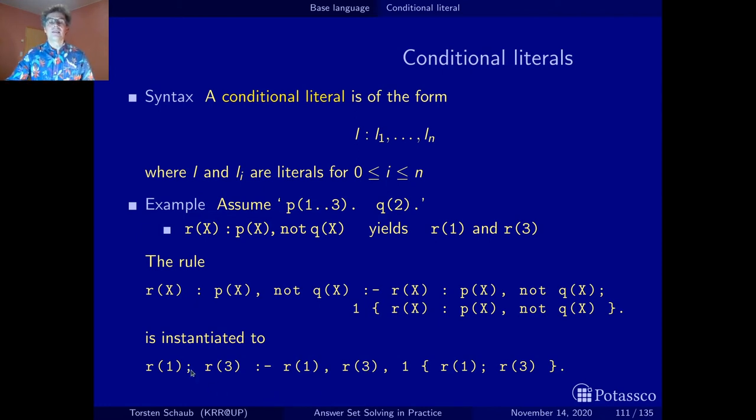Actually, it's not really the symbol, the semicolon or the comma that tell us that this is a disjunction, this is a conjunction. It's simply the fact that it's the head and it's the body. And if you have several elements in the head, they form a disjunction and you have several elements in the body, they form a conjunction.